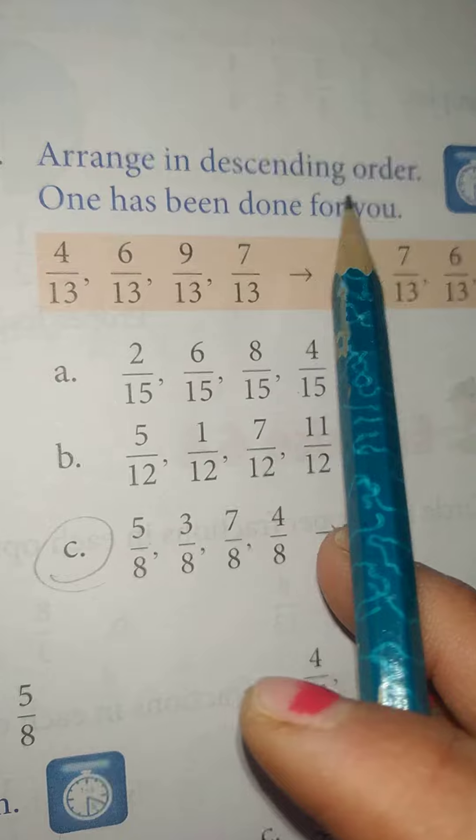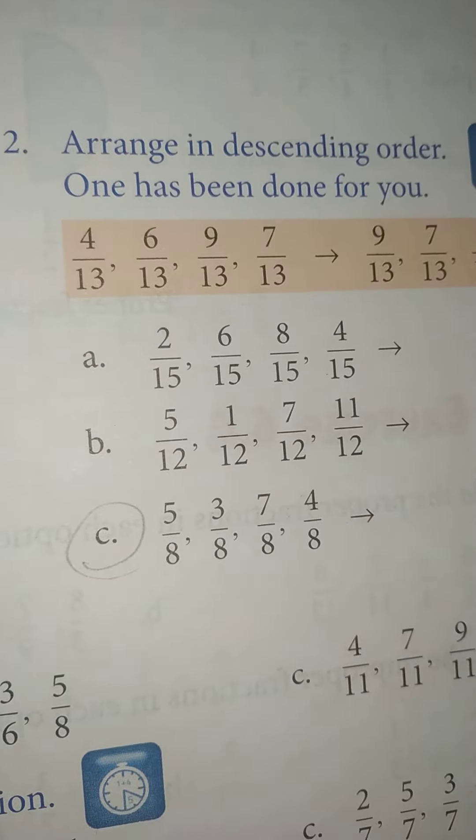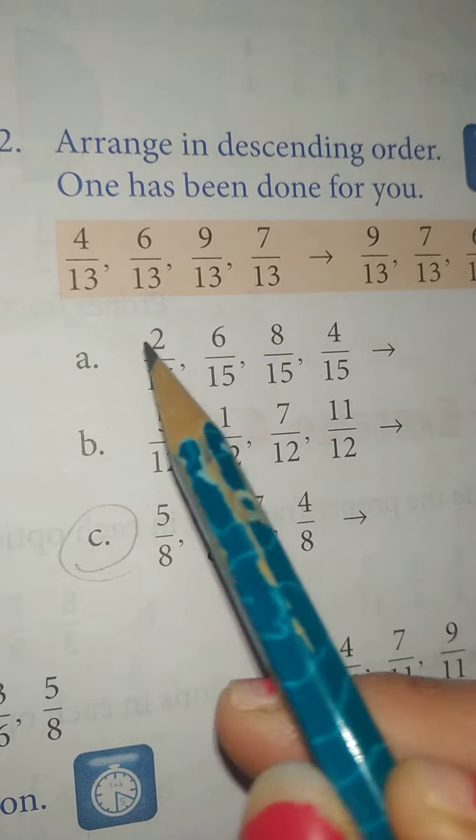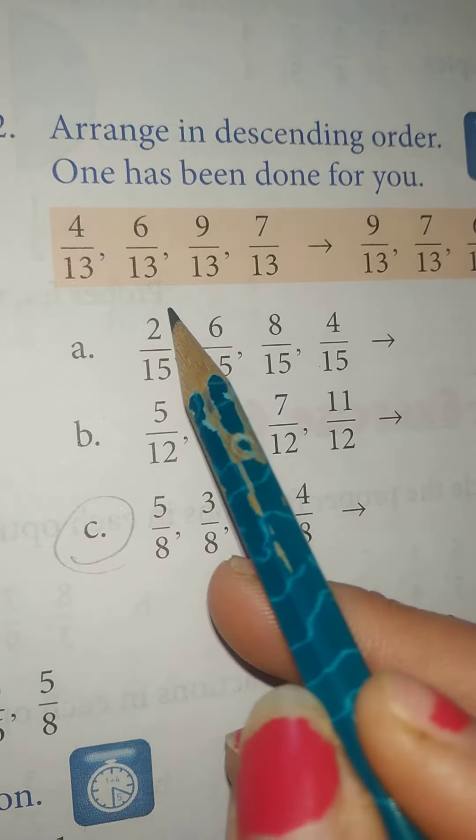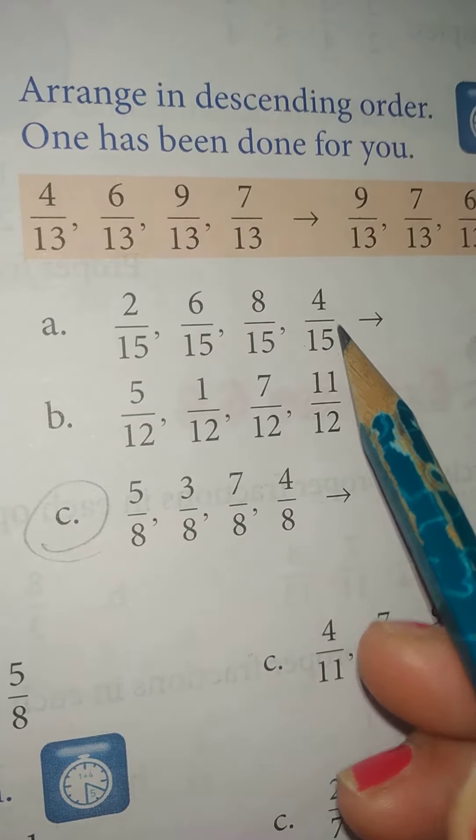Now in the next question, arrange in descending order. Yhaa par aapko descending order me arrange karna hai, means sab se phale sab se greatest fraction, and last me sab se smallest. So 2 by 15, 6 by 15, 8 by 15, and 4 by 15...